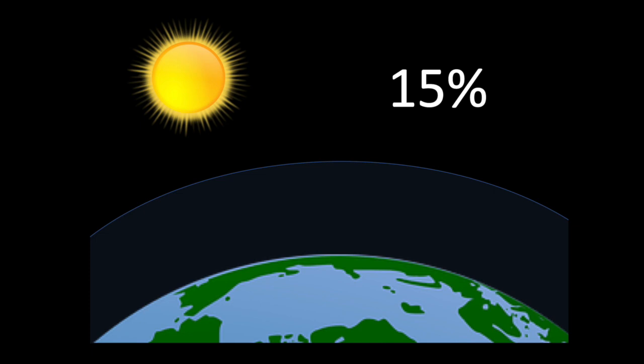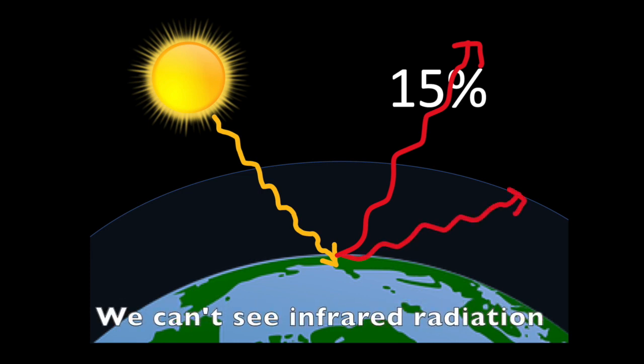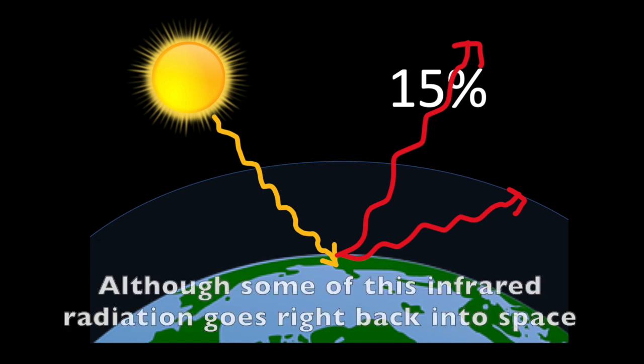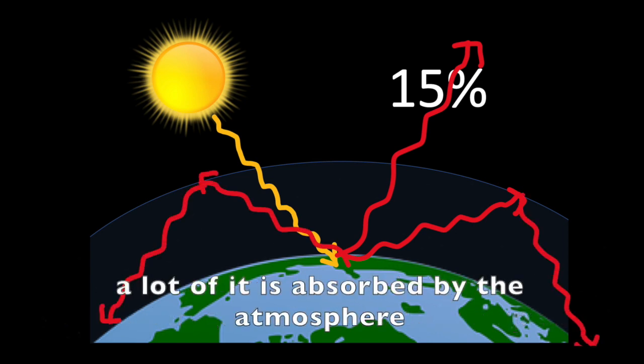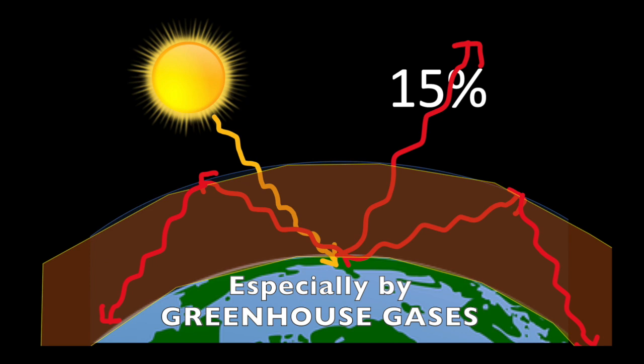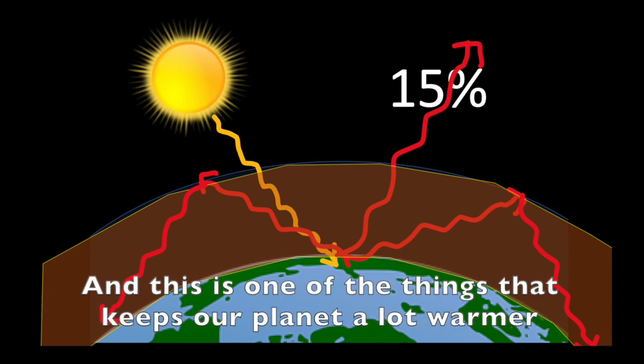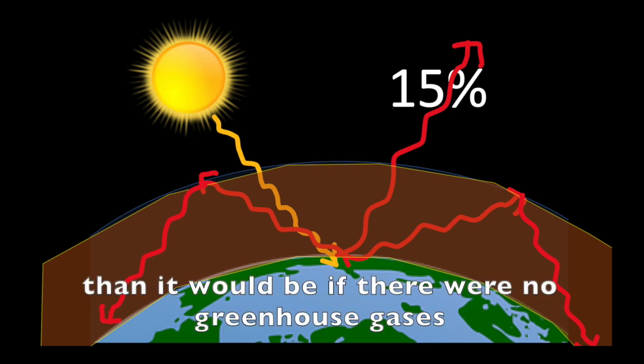The remaining 15% of the incoming solar energy is radiated back as infrared radiation. We can't see infrared radiation, but we can feel it as heat. Although some of this infrared radiation goes right back into space, a lot of it is absorbed by the atmosphere, especially by greenhouse gases. Greenhouse gases can radiate this energy back towards the Earth, and this is one of the things that keeps our planet a lot warmer than it would be if there were no greenhouse gases.